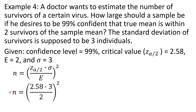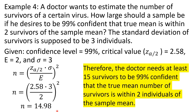Since we want to know the sample size, we will use the formula: n equals Z sub alpha over 2 times sigma over E, squared. By substitution: n equals 2.58 times 3 over 2, squared. By order of operations, multiply 2.58 times 3 and divide by 2 first, then square the result. The value of n or sample size is 14.98. Therefore, the doctor needs at least 15 survivors — rounding to the next whole number — to be 99% confident that the true number of survivors is within 2 individuals of the sample mean.